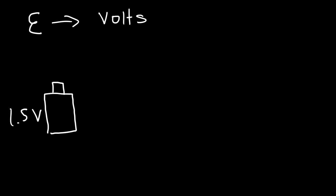A battery converts chemical energy into electrical energy. There are other examples like a solar cell, which converts light energy into electrical energy, so it's a source of EMF. Then you have a thermocouple, which converts heat energy into electrical energy, and a generator, which converts mechanical energy into electrical energy. All of these generate an EMF because they're the source of energy for the circuit.